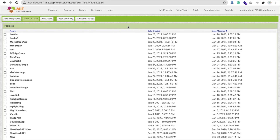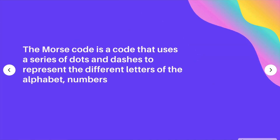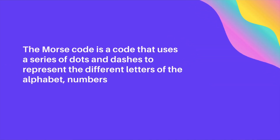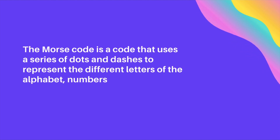Hello inventors, this is Sara. In this video we will learn about Morse code and we will create a simple app that can convert normal text to Morse code. Morse code is a code that uses a series of dots and dashes to represent the different letters of the alphabet and numbers. Using just dots and dashes you can write anything.